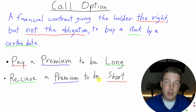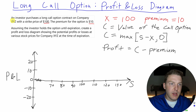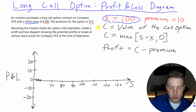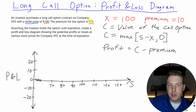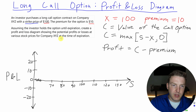Let's draw the profit and loss diagram for a call option in which we are long. An investor purchases a long call option contract on company XYZ with a strike price of $100 — that's the amount we're able to buy this stock at, so X equals 100. The premium for the option is $10, meaning we paid $10 to purchase this option. We'll show potential profits or losses at various stock prices at expiration.